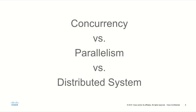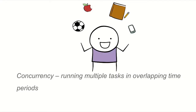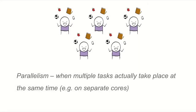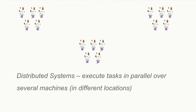We need to grow the capacity of our system, and we did it by using three paradigms: concurrency, parallelism, and distribution. When I say concurrency, I mean running multiple tasks in overlapping time periods, but not necessarily at the same time — think about one CPU performing multiple tasks. When I say parallelism, I mean performing multiple tasks actually at the same time, for example on multiple CPUs. And when I talk about distributed systems, I mean systems that execute tasks in parallel but over several machines, possibly in several different data centers.